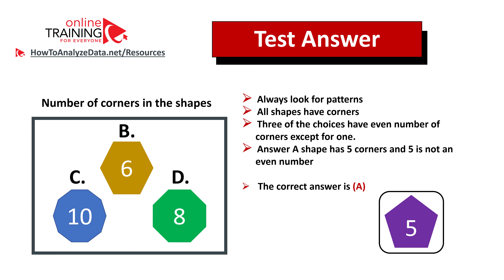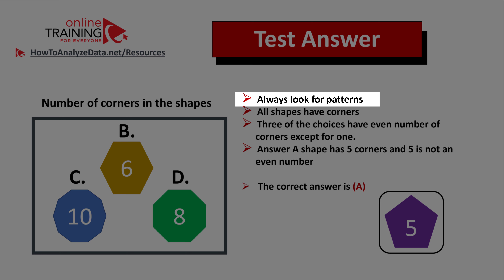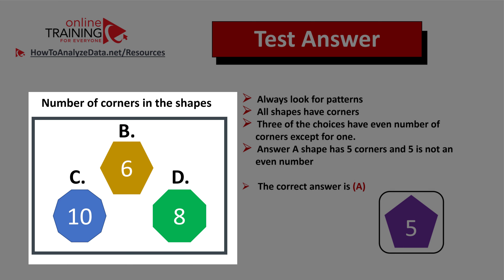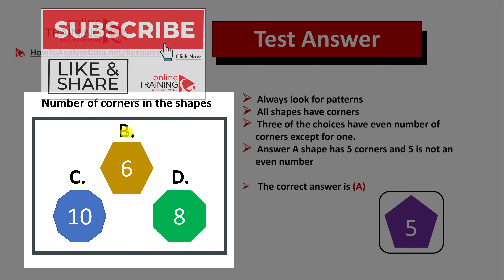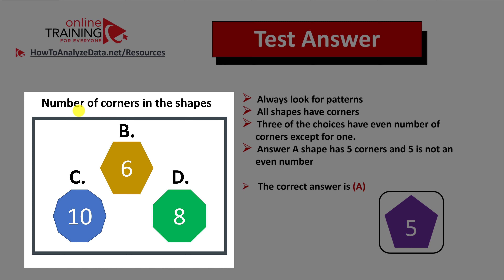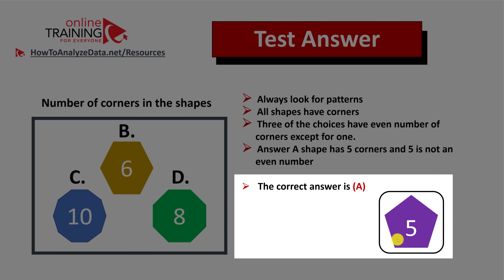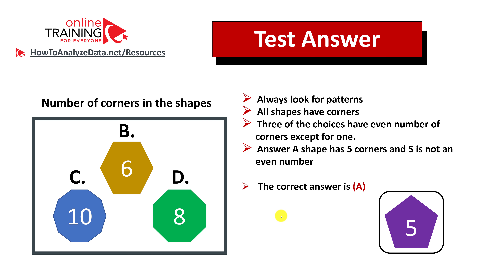Always look for patterns. The pattern specific to this question is the number of corners in each shape. Three choices have even numbers of corners except for one: choices b, c, and d have six, ten, and eight corners respectively, while choice a only has five corners. So the correct answer is choice a.